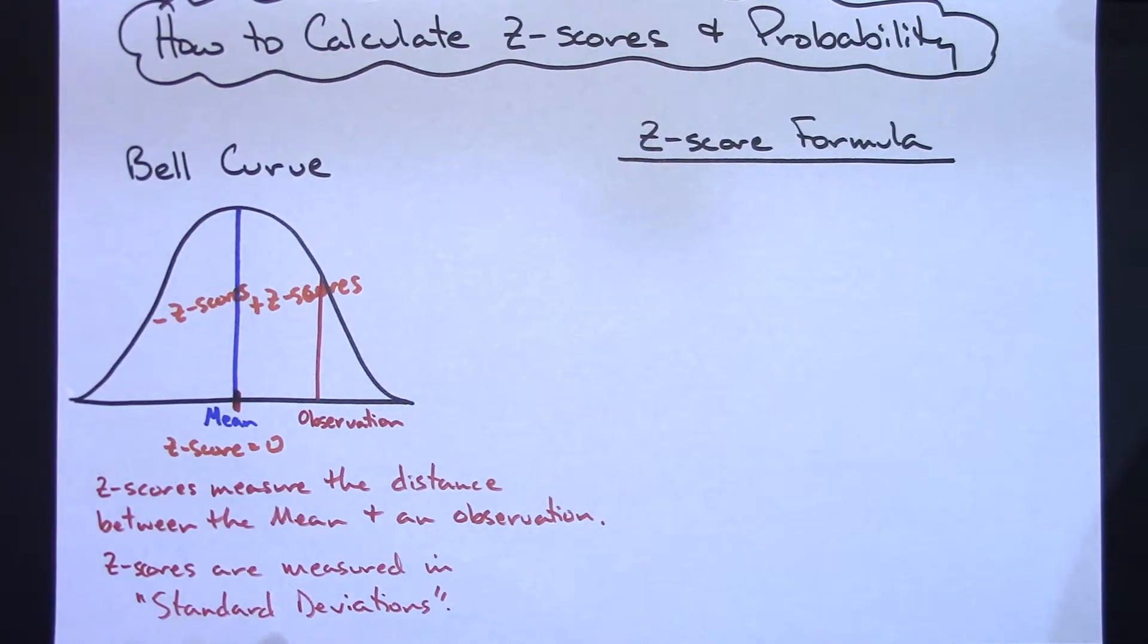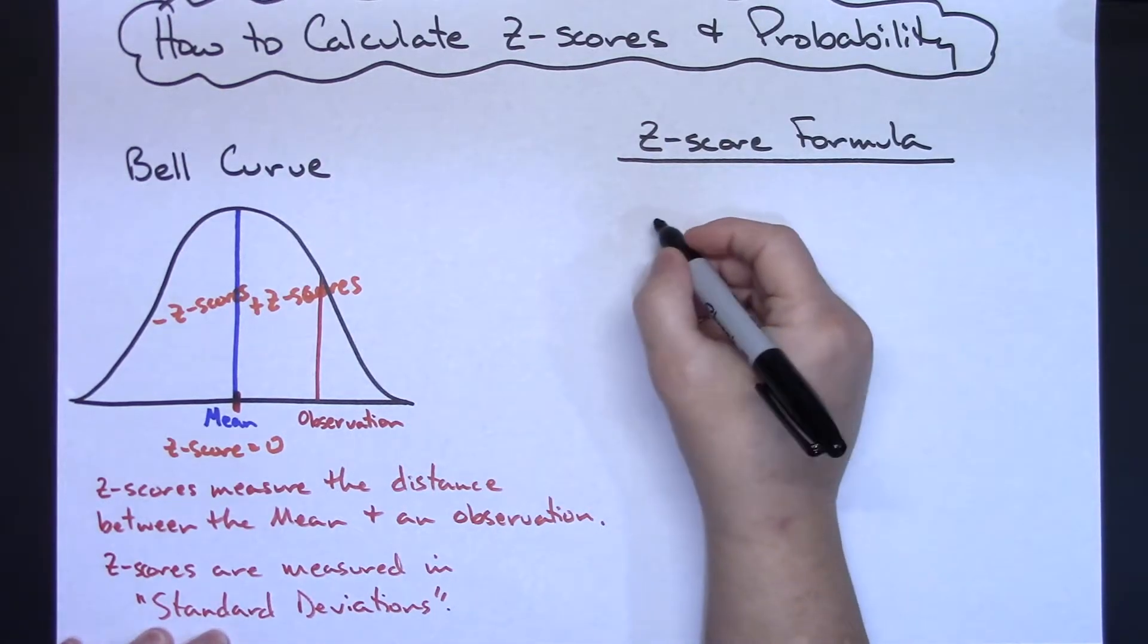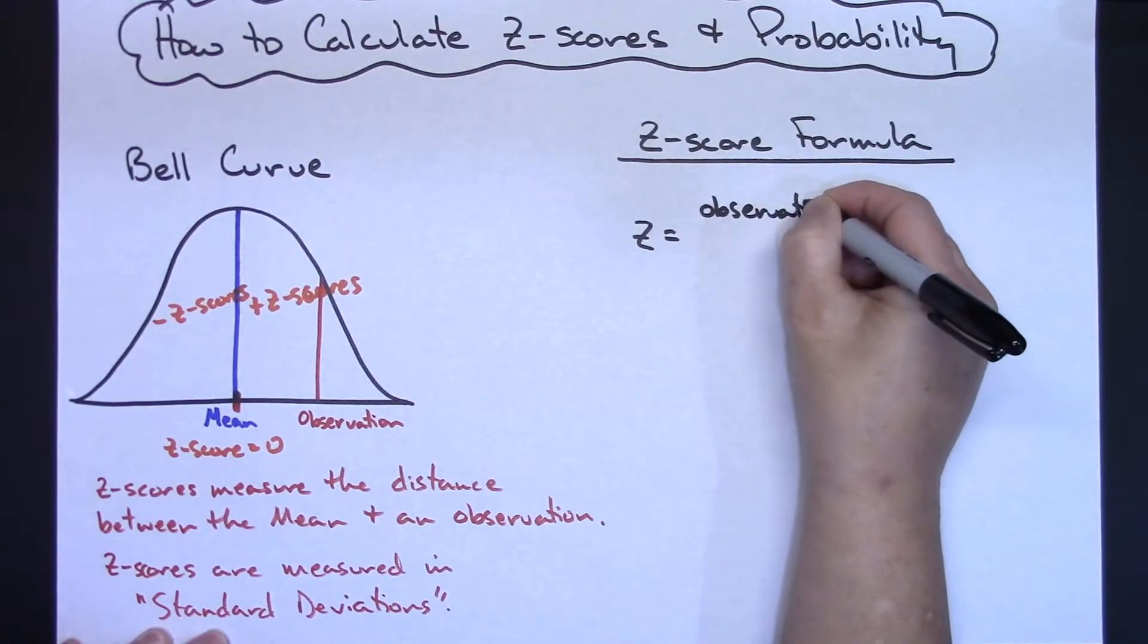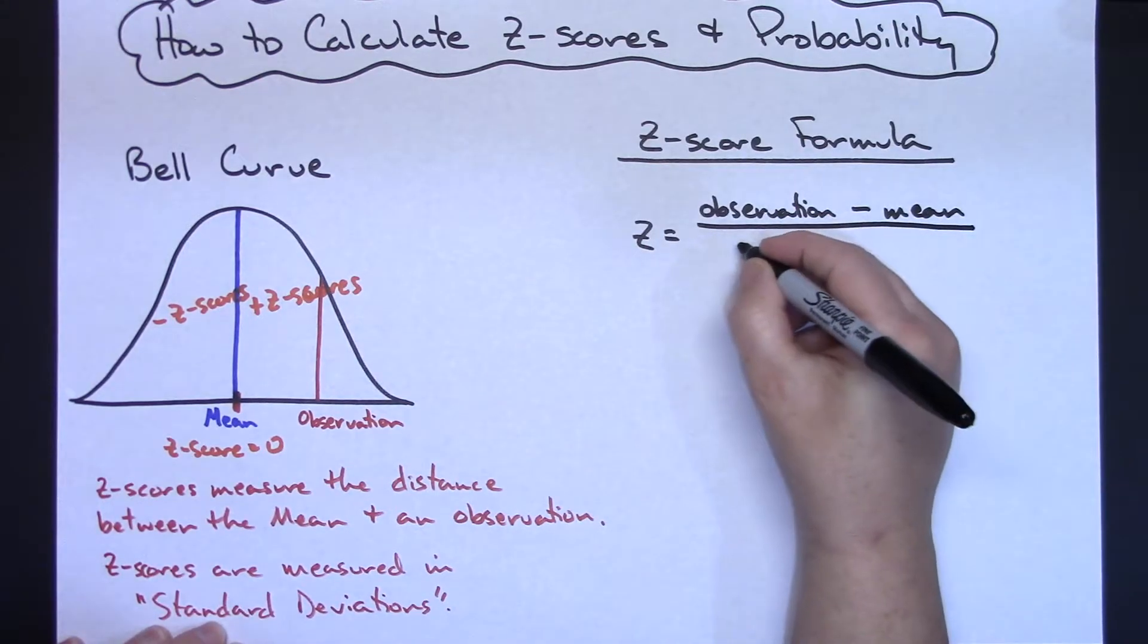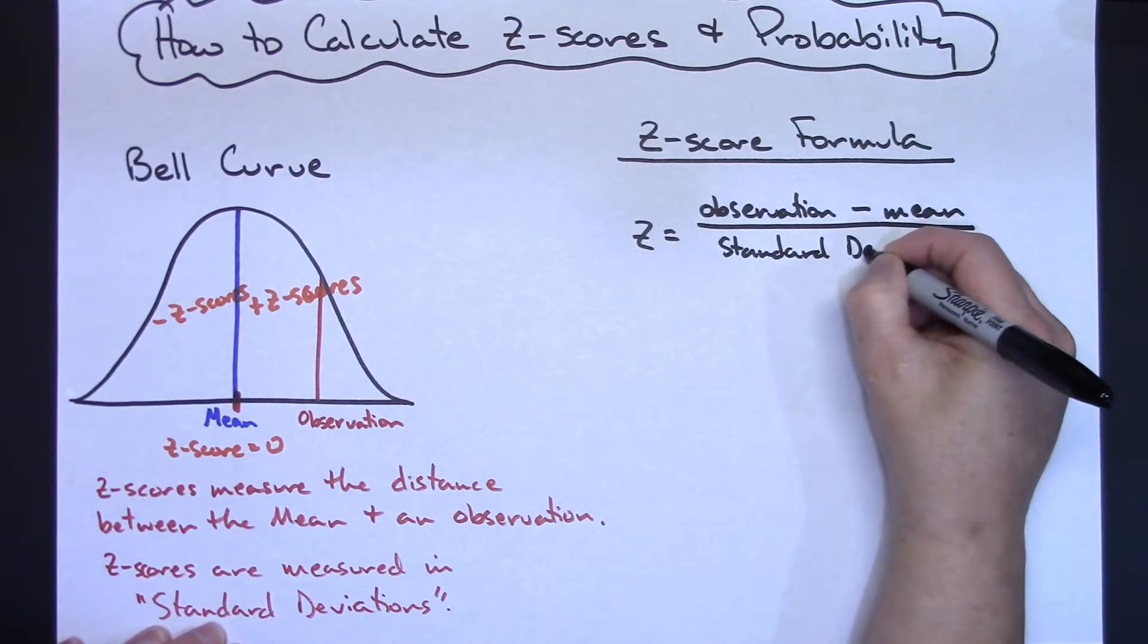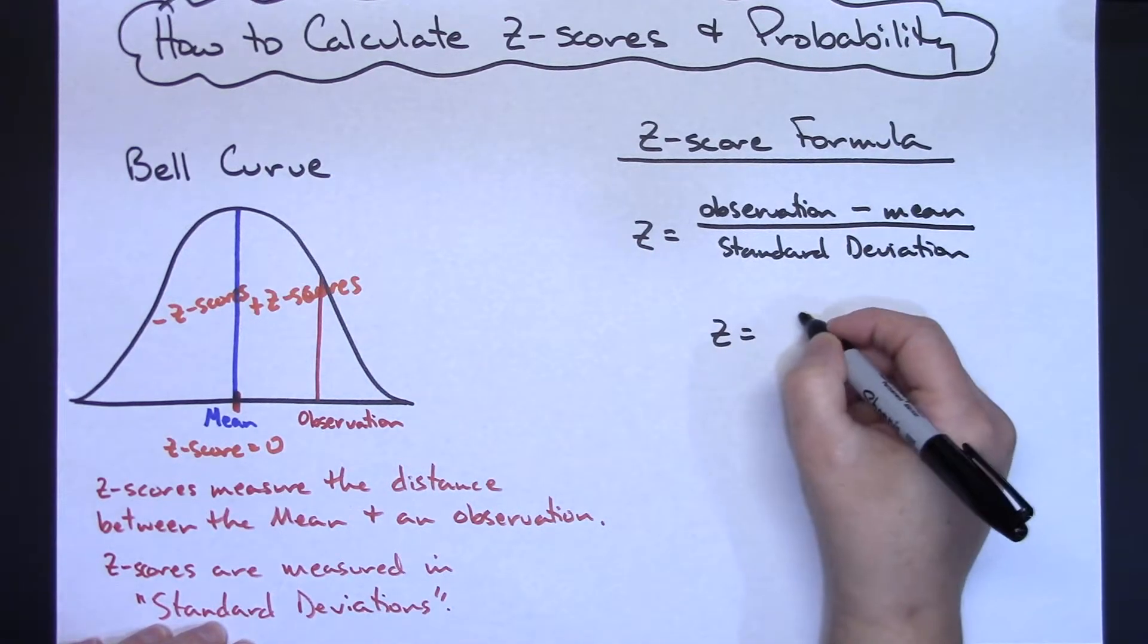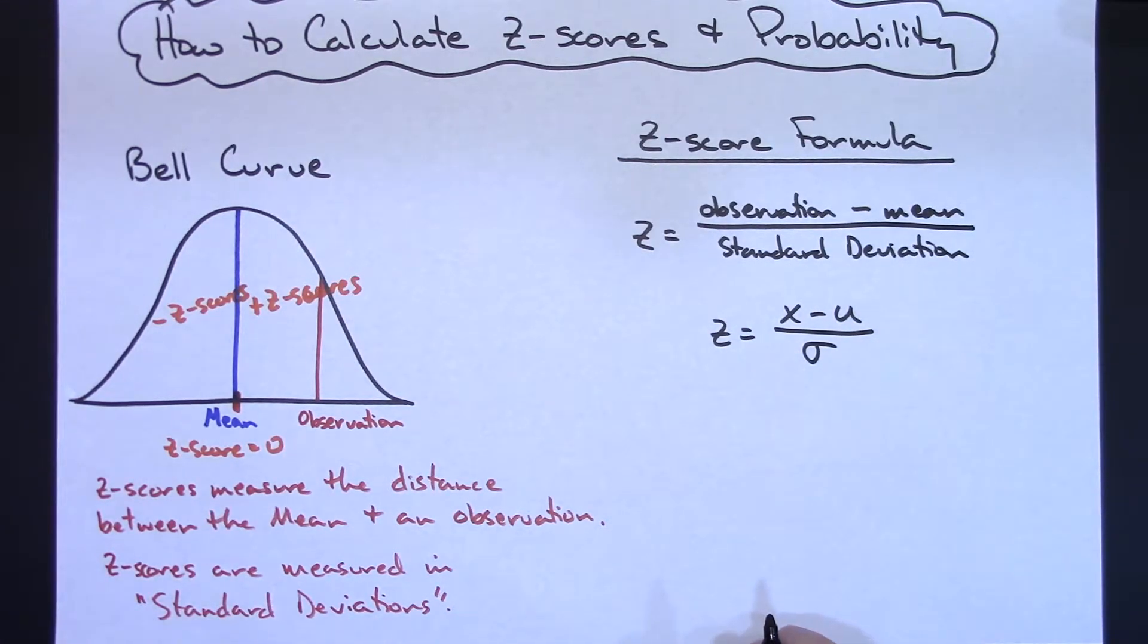Now let's take a look at the formula. Let's do it in words first, and then we'll use symbols. Our z-score is going to be found by taking our observation minus our mean and dividing that by the standard deviation. Now in common mathematical symbols, z equals x minus the mean over the standard deviation, which is your typical formula that you generally see in your statistics class.